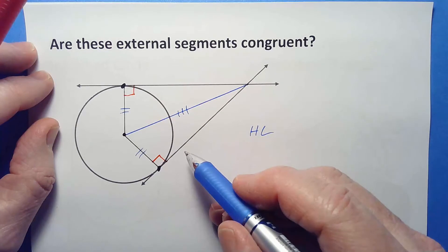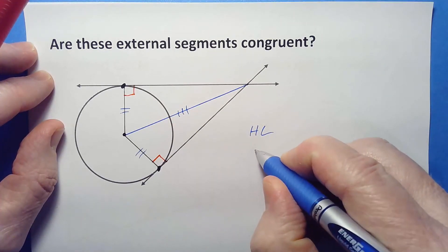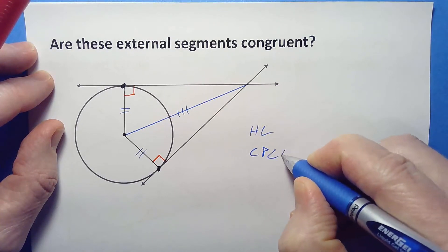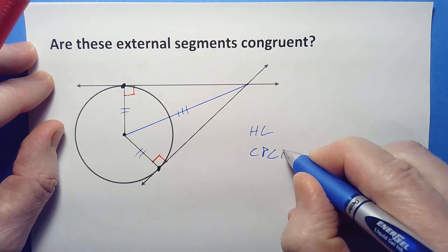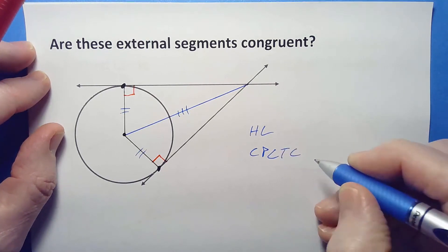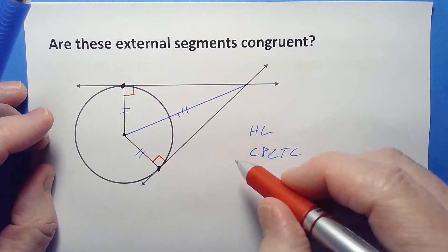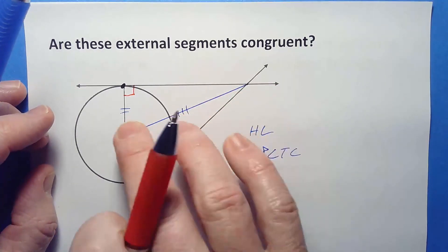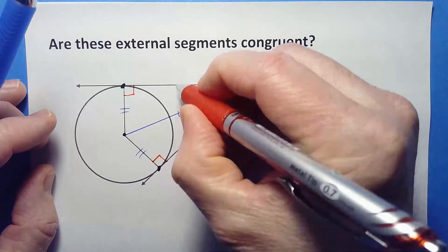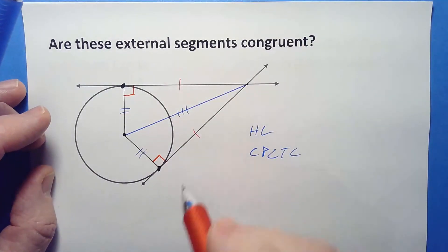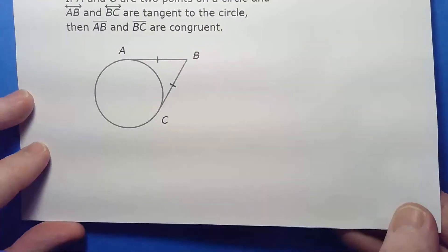If those two triangles are congruent to each other, then by CPCTC — corresponding parts of congruent triangles are congruent — any piece of one is congruent to the corresponding piece of the other. So this segment is congruent to that one. That's exactly what we need, and we've got a cool theorem for it.